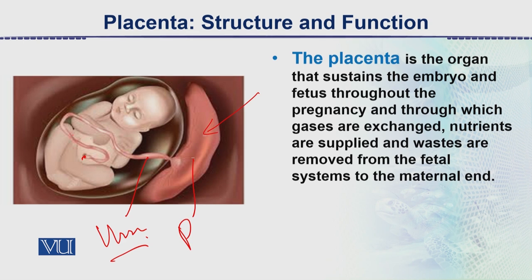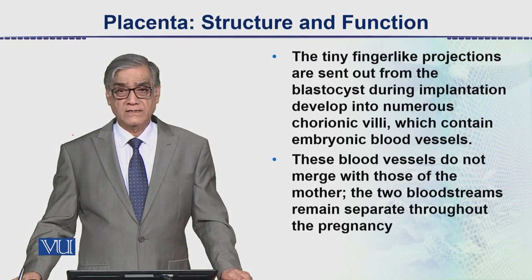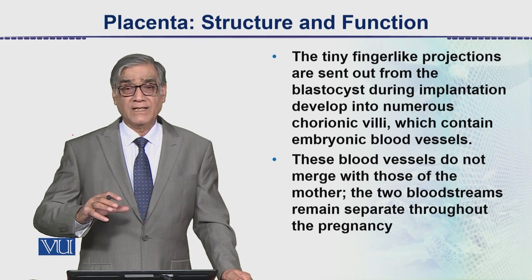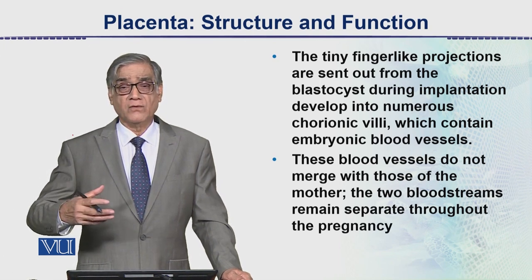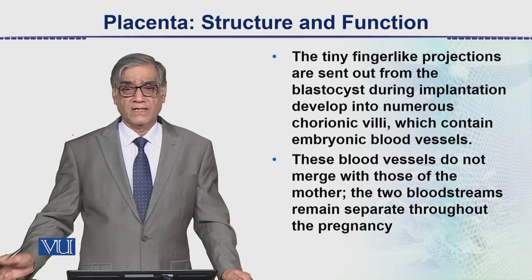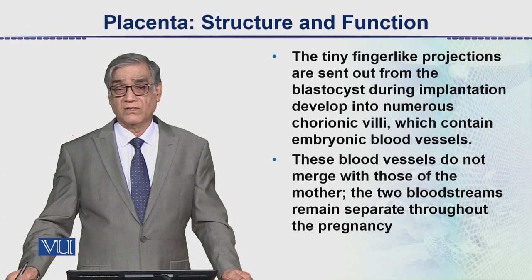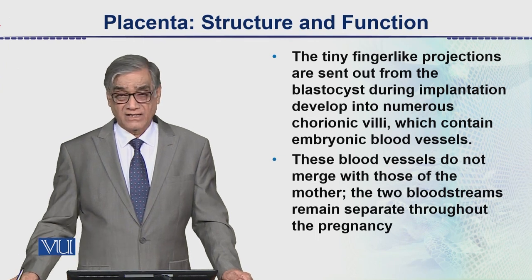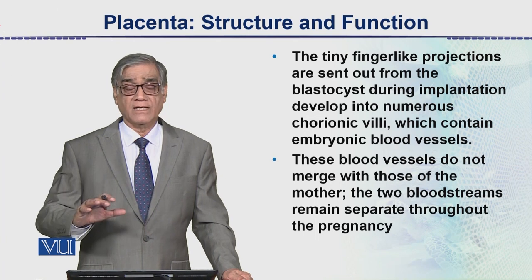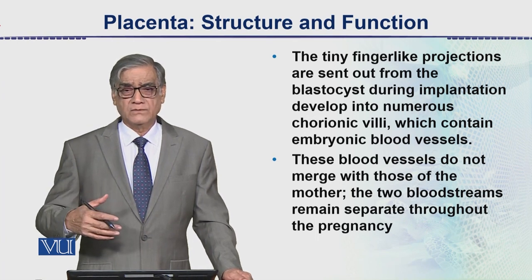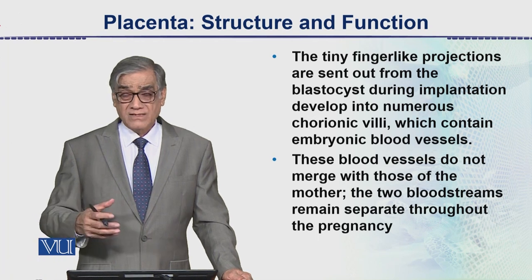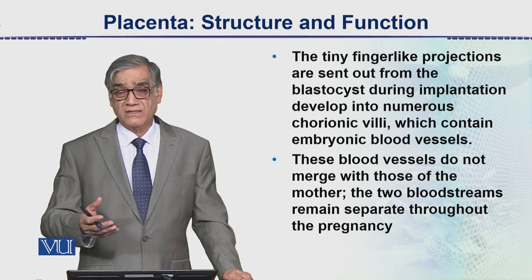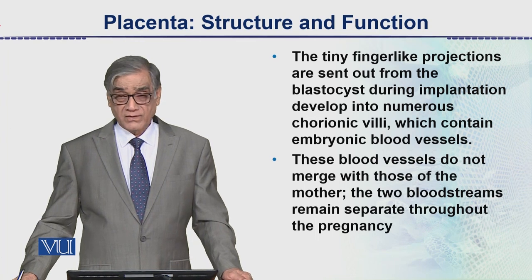Now let us see the structure in detail. The tiny finger-like projections - as we saw in previous modules, the trophoblast divides and re-divides, and connections develop with the endometrium - that is the start of this placenta. These are called chorionic villi; chorion is the membrane, and the chorionic villi penetrate into the endometrium.